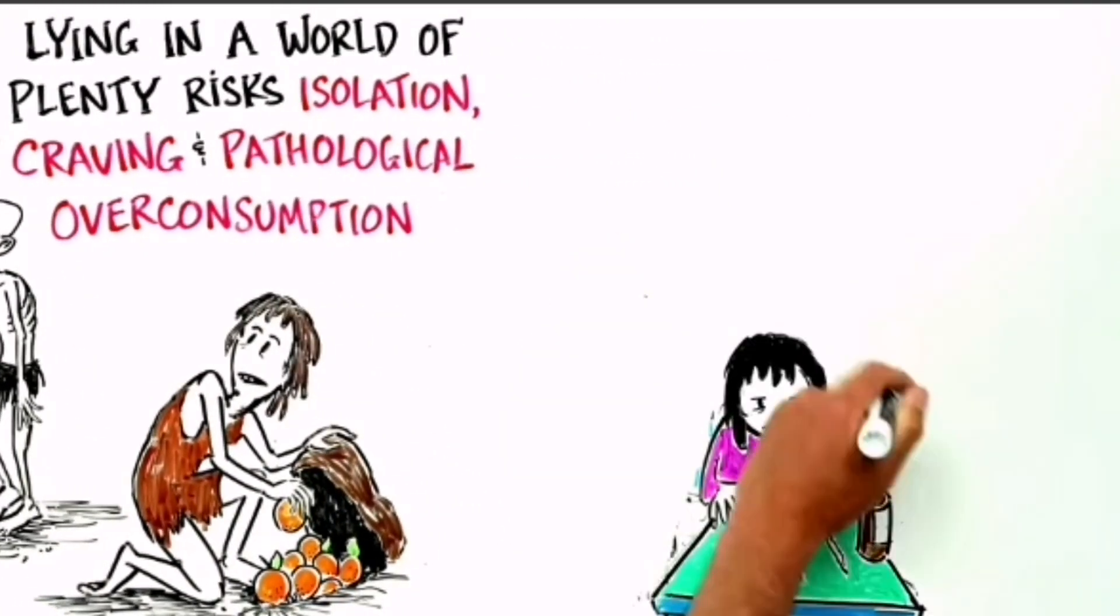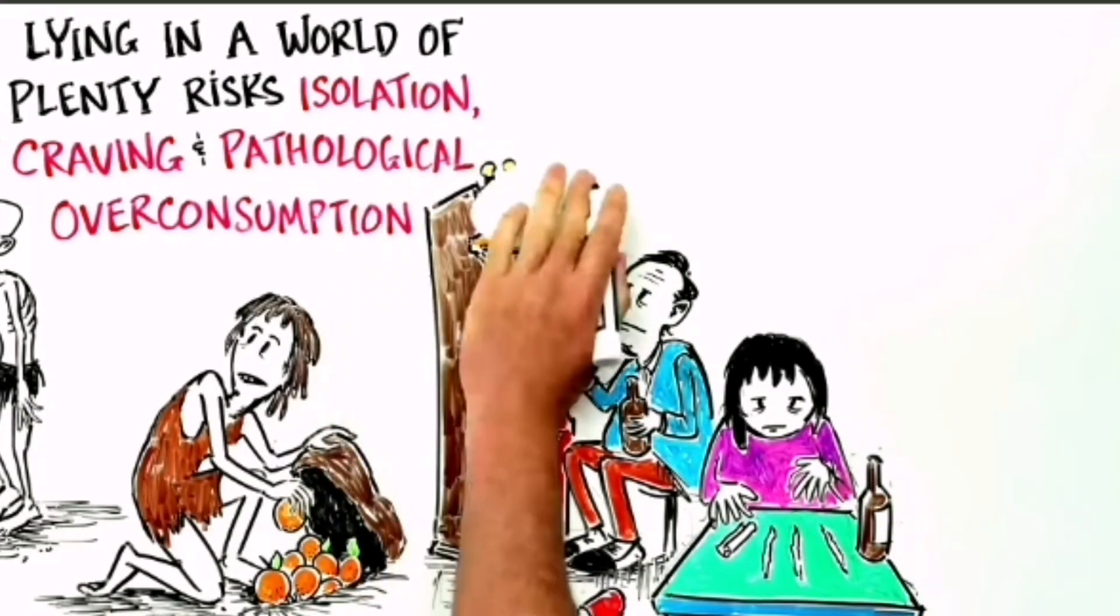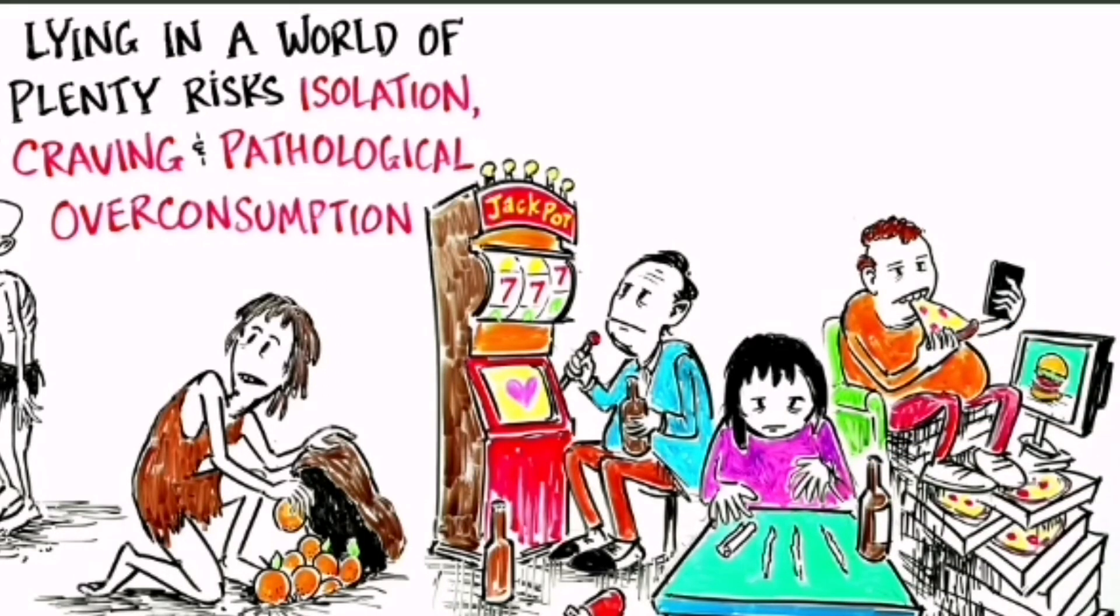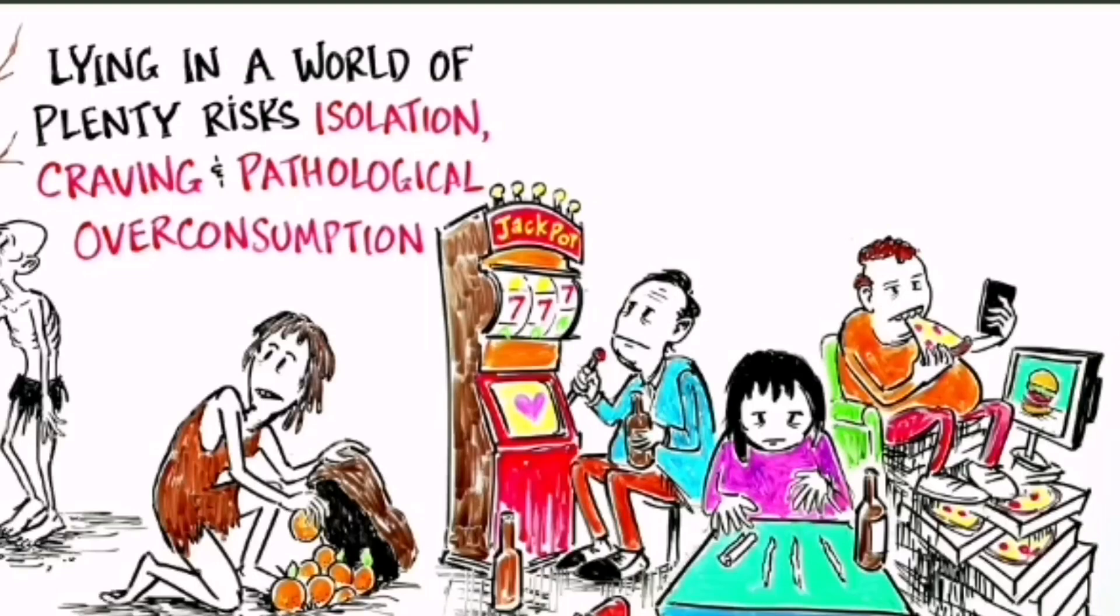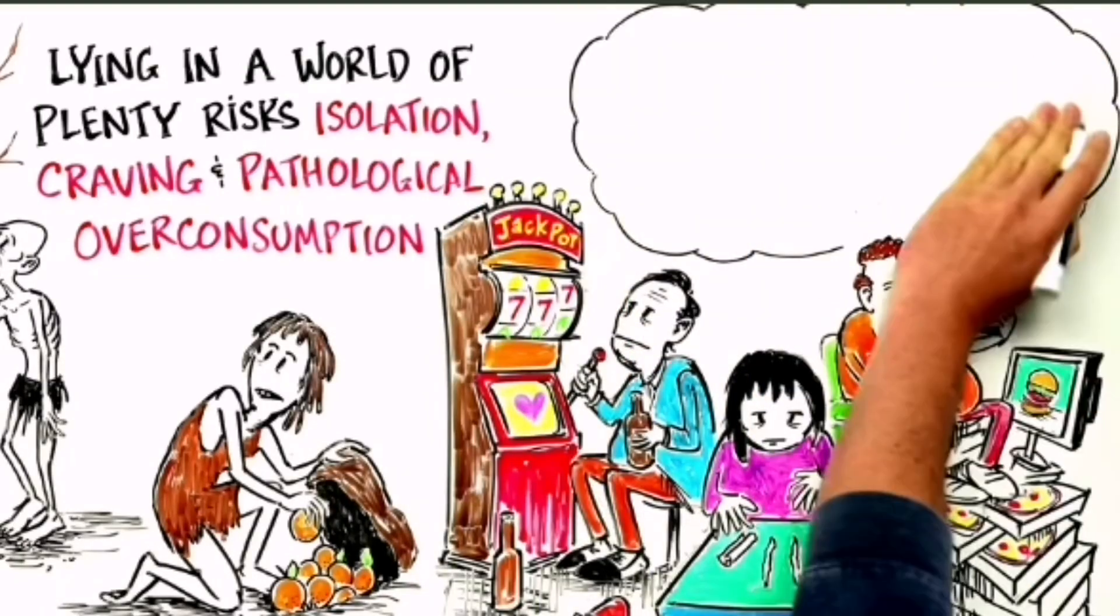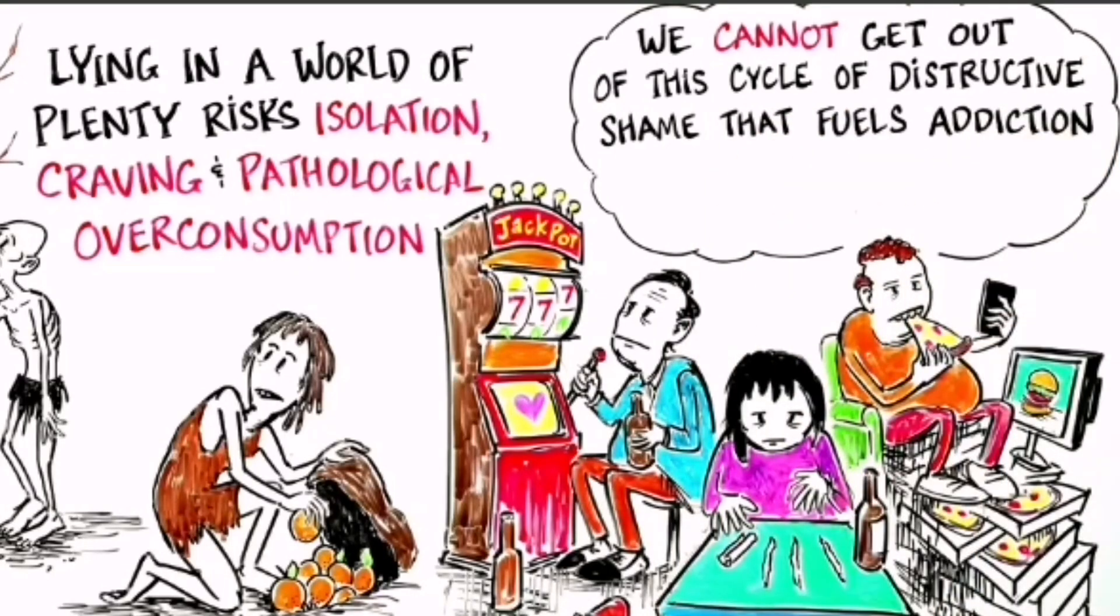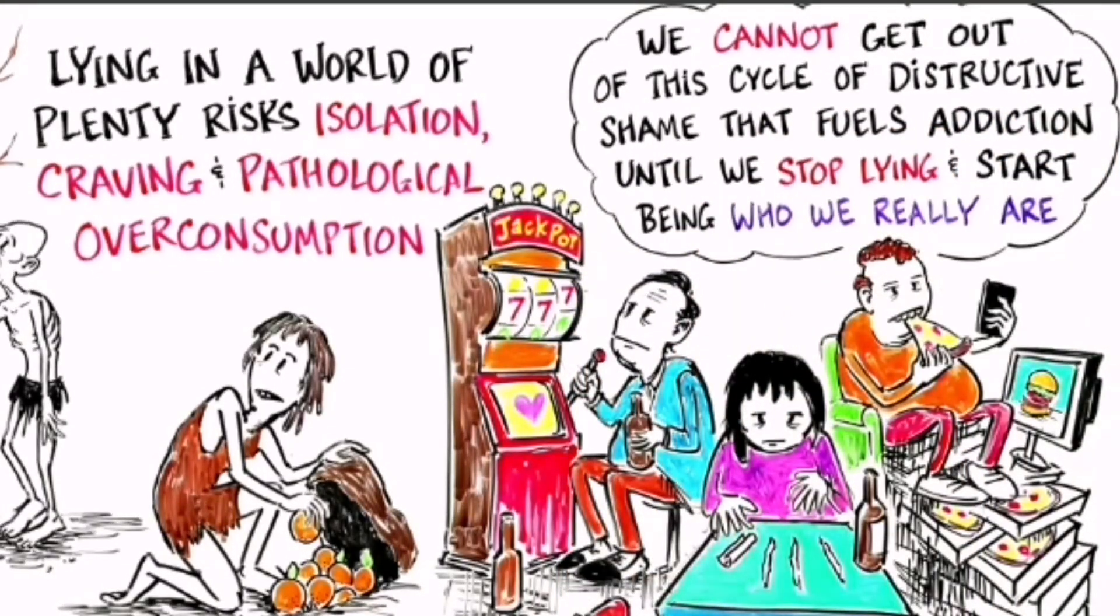In today's world of overwhelming abundance, it is easy to slip into behaviors that feel good in the short term, but are ultimately destructive in the long term. We engage in lying and create a false persona or a mask to cover up our behaviors, which leads to shame and isolation and fuels ongoing consumption. We cannot get out of this cycle of destructive shame that fuels addiction until we stop lying and start being who we really are.